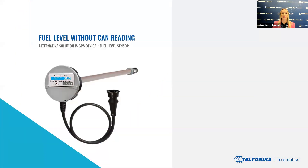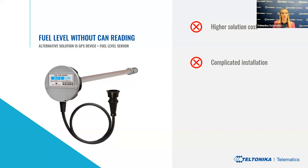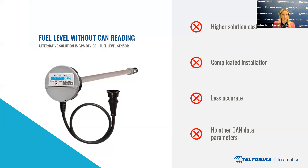For GPS devices without CAN bus data reading functionality, an alternative for fuel level data is an additionally installed fuel level sensor. However, this is approximately three times more expensive due to additional equipment, installation costs and time. It is not an all-in-one solution, requiring multiple installation steps, and in some cases the vehicle fuel tank needs to be physically damaged. It is also less accurate due to different tank shapes and difficult calibration. Most importantly, you don't get other CAN data values that could open up cost-saving possibilities for your clients, such as total mileage used for maintenance calculations.